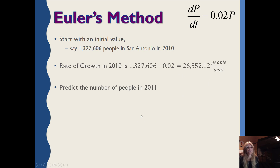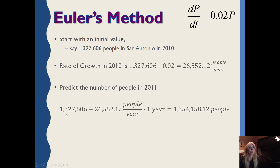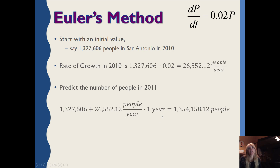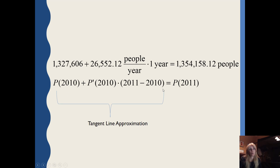Starting with an initial population value at a particular time, I can find the growth rate — 2% of the population at that time — which comes to about 26,552 people per year. I can then predict the number of people in the next year by taking my initial amount plus the growth rate times the gap. This is the tangent line approximation: what I know, how fast it's changing, and how far you jumped, giving my prediction value.